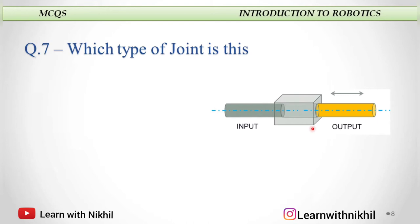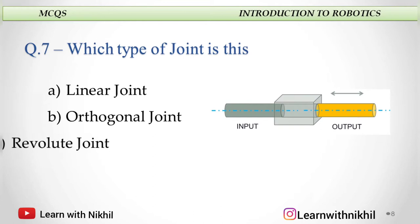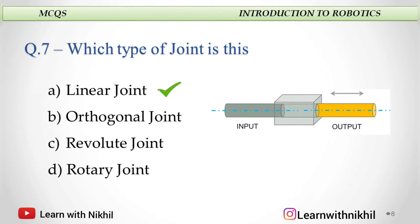Which type of joint is this? See the image. A. Linear joint, B. Orthogonal joint, C. Revolute joint, or D. Rotary joint. This is a linear joint, as the input and the output axis are parallel to each other and it slides. This sliding joint is a type of a linear joint.